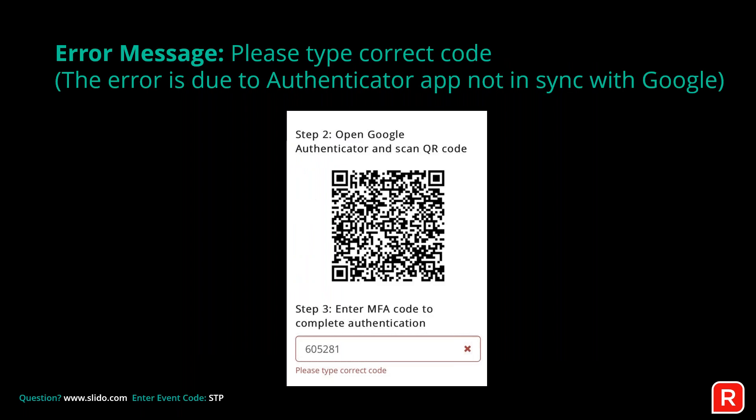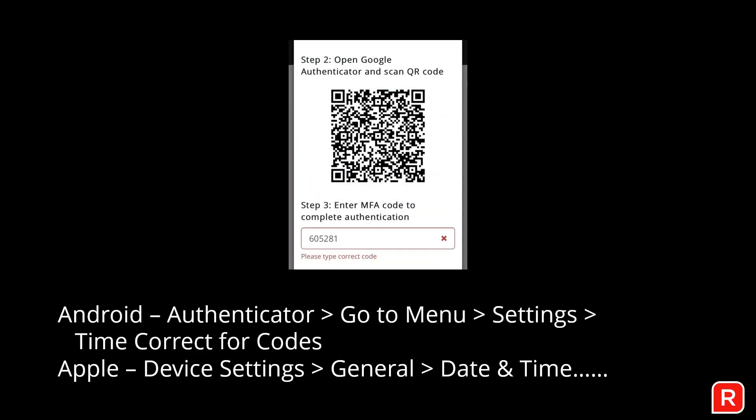If you're using Google Authenticator and it says 'Please Type Correct Code,' it means you're out of sync with Google. On Android, go to Authenticator menu, Settings, and 'Time Correct for Codes.' On iPhone, go to Device Settings, General, Date and Time — this will sync it up with Google.